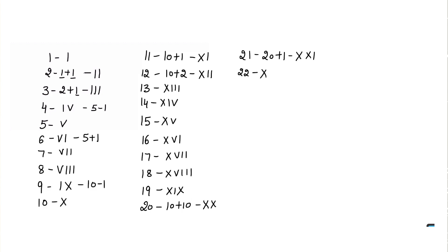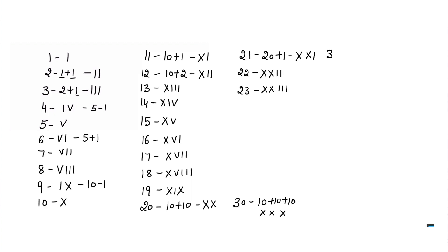22 is XXII, 23 is XXIII, and similarly you can go up to 30. 30 can be written as 10 plus 10 plus 10, which is XXX. 31 is 30 plus 1, which is XXXI. Similarly, 32 is XXXII, 33 is XXXIII, and you can continue from there.